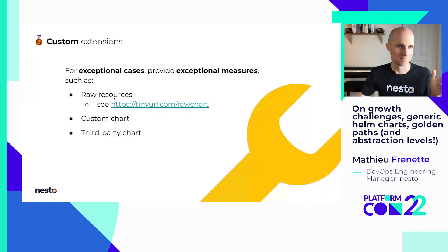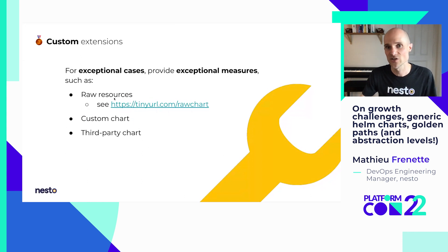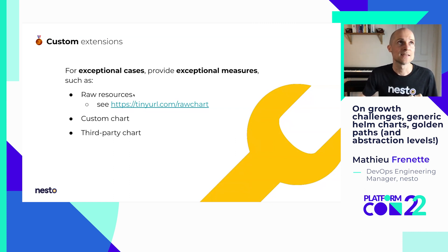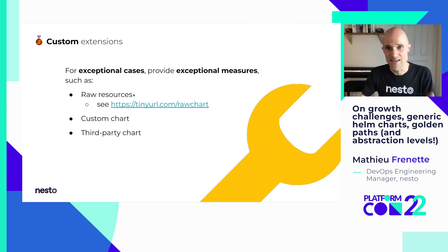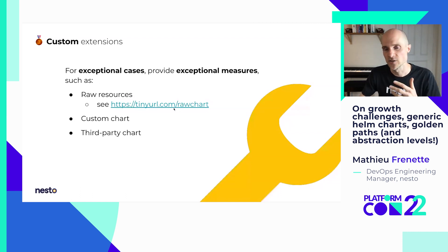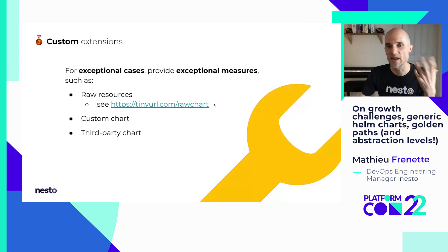For the last abstraction level: for exceptional cases, we need to provide exceptional measures to developers. If the chart just doesn't support what they want to do, they have to have an escape route. For example, raw resources — there's a section in the values file where you can put arbitrary manifest YAML and it will just be passed into the chart as-is, like a pass-through. If you want an example of how that works, just look at any raw chart — it basically just renders whatever values you pass as YAML.